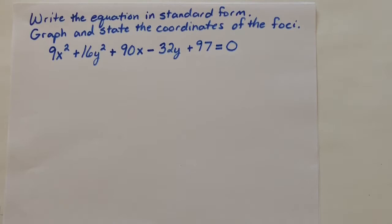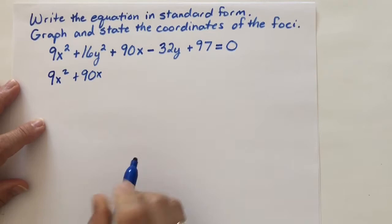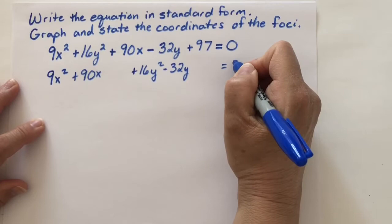That means we're going to put the terms that contain the x together. So I have 9x² + 90x and we're going to put the terms together that have y's in them. So I have +16y² - 32y and I'm going to subtract 97. Just get it out of the way so I can complete the square easily with respect to x and y.